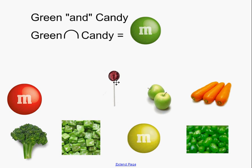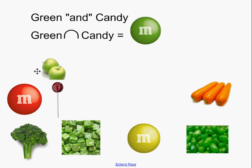The purple lollipop is no good. Even though it's candy, it's not green, so that does not belong. How about the green apple? That's green, right? But unfortunately, it's not a candy, so it does not belong in the intersection.